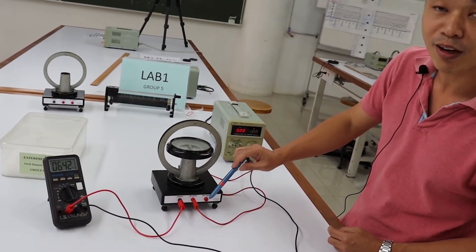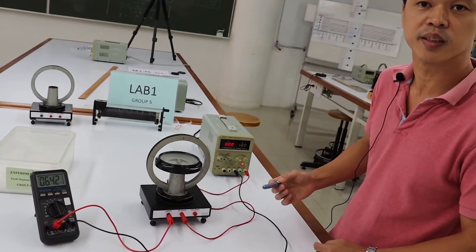Second part, we use 500 turns coil at the lower applied voltage of 2 volts.